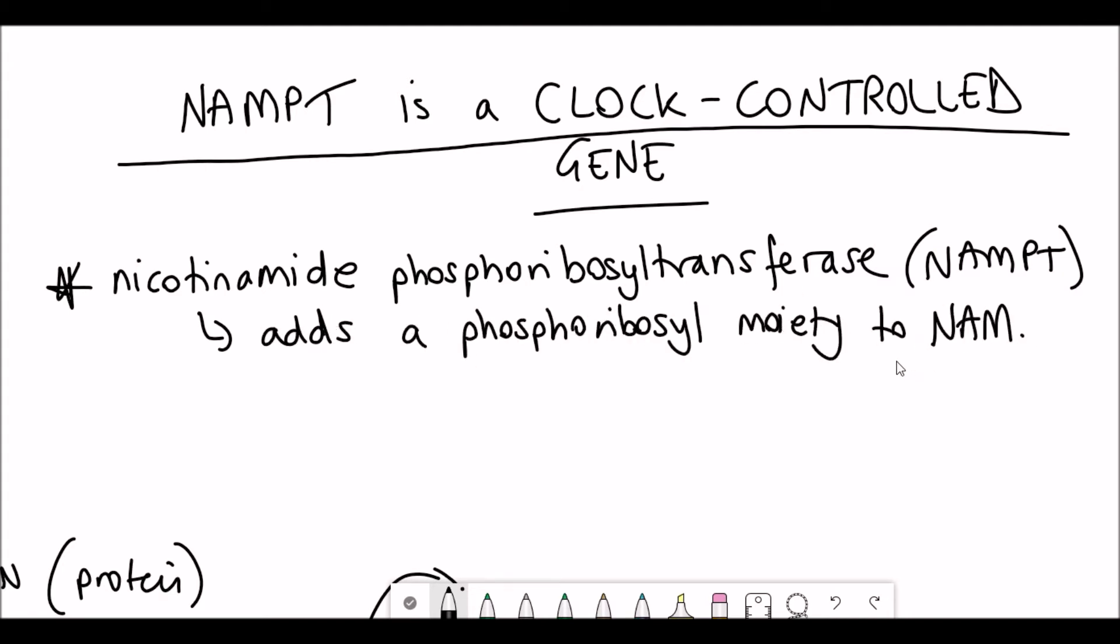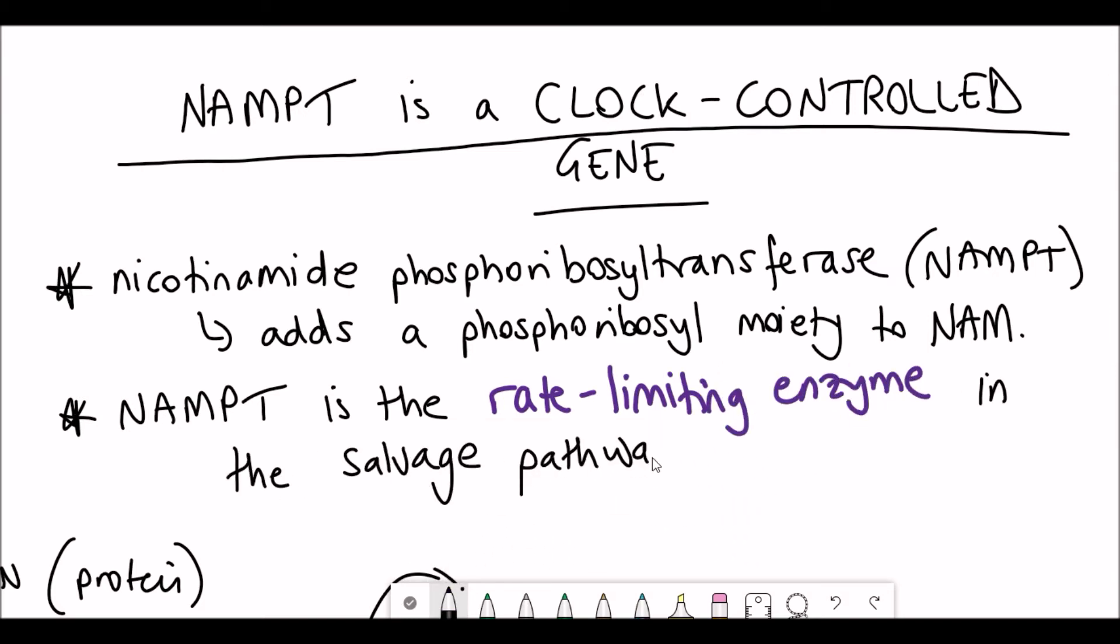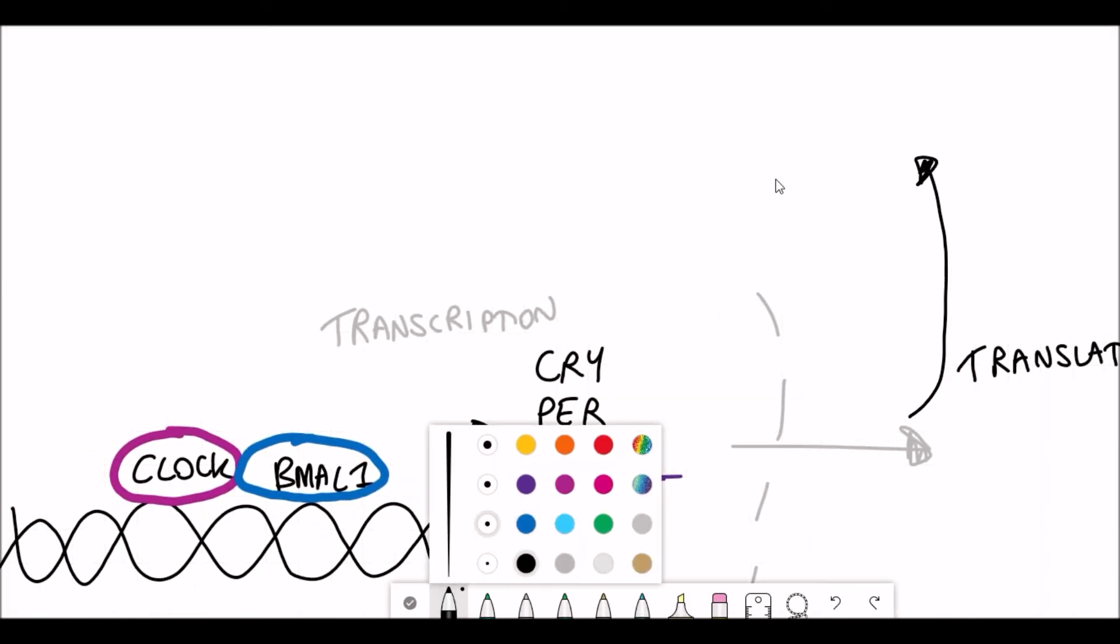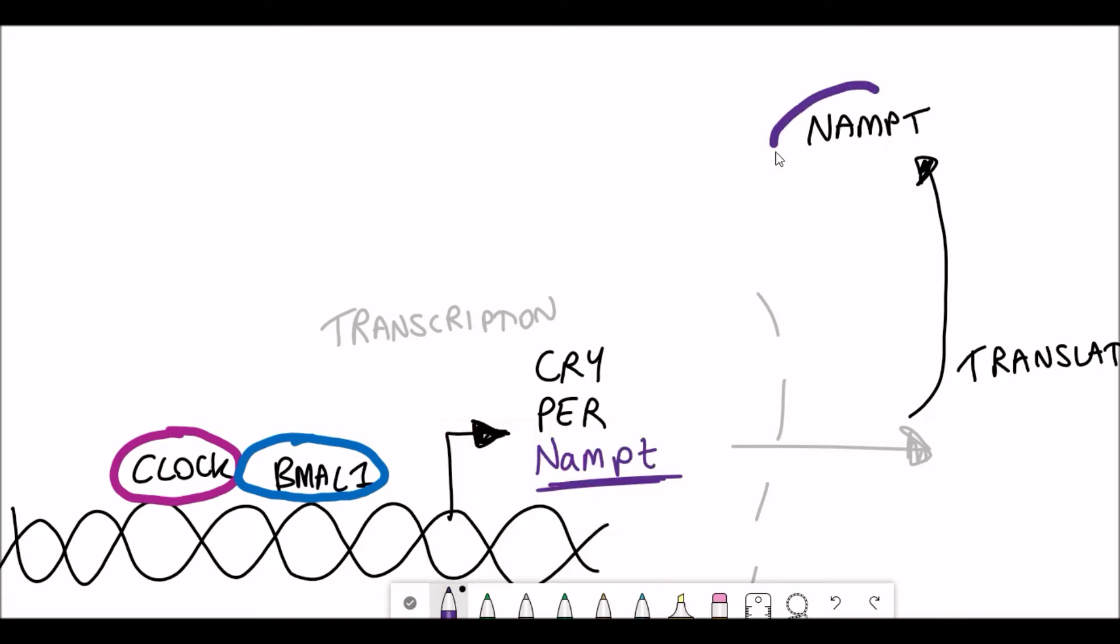So as I said, NAMPT adds a phosphoribosyl moiety to nicotinamide and that converts nicotinamide into NMN. And so NAMPT is actually the rate limiting enzyme in the salvage pathway of regenerating NAD+. So actually the levels of NAMPT is really important for dictating the amount of NAD+ that's present in the body.